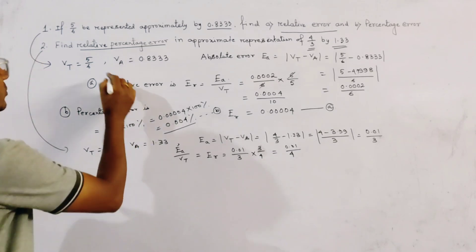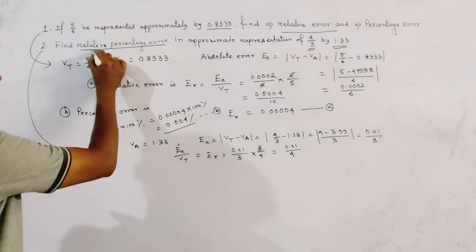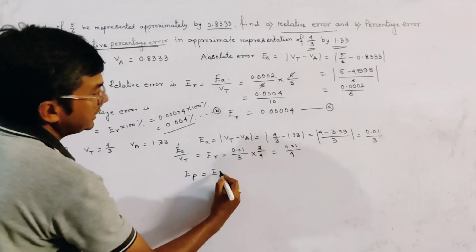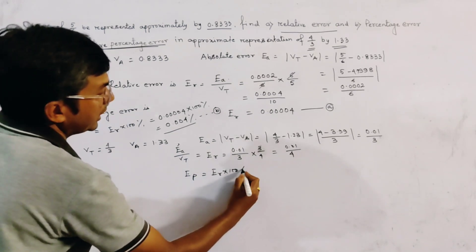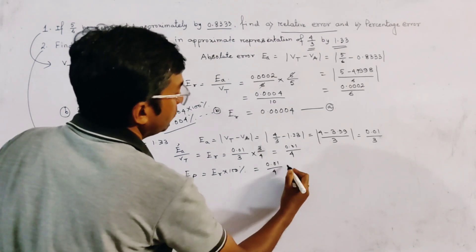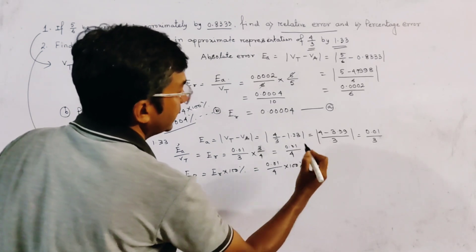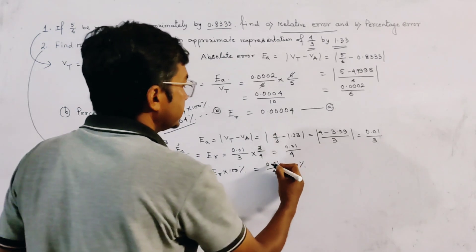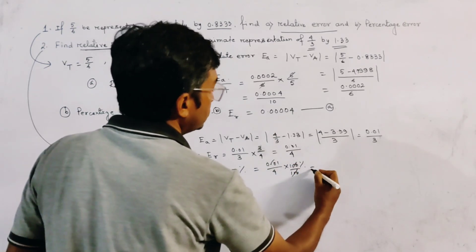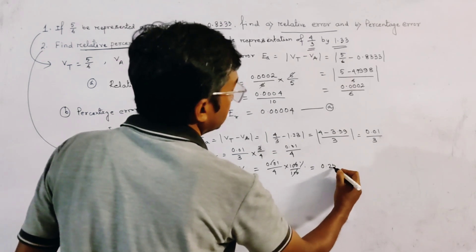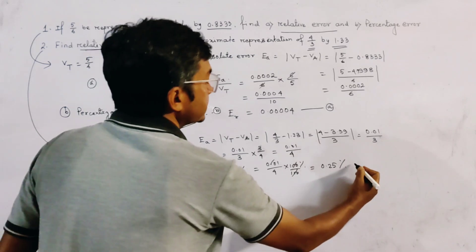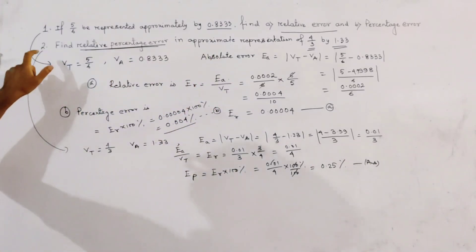Now we find the relative percentage error, which means percentage error EP. EP is equal to Er × 100%, so this is (0.01/4) × 100%. The 100 cancels with the denominator appropriately, giving 0.25%. This is the answer to problem number 2.